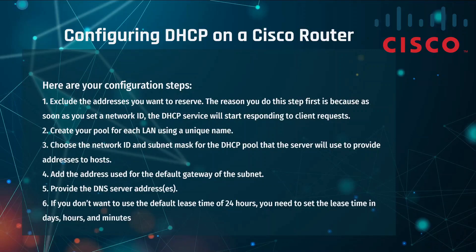In today's tutorial I'm going to configure a DHCP server on a Cisco router. The first step is to exclude the addresses you want to reserve. We do this first because as soon as you set the network ID, the DHCP server will start responding to client requests, so make sure to reserve addresses you don't want assigned to clients.